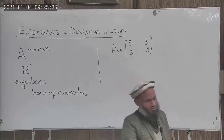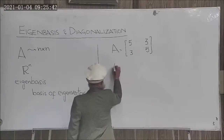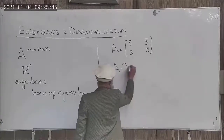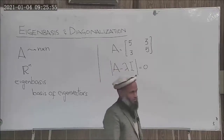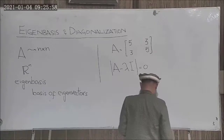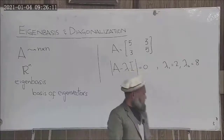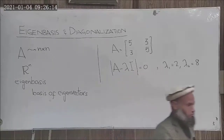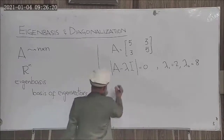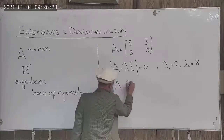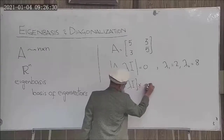You know how to find eigenvalues and eigenvectors corresponding to a matrix. Eigenvalues can be computed from the characteristic determinant — the determinant of (A minus lambda I). From this determinant you find the eigenvalues, and corresponding to these eigenvalues you determine the eigenvectors.